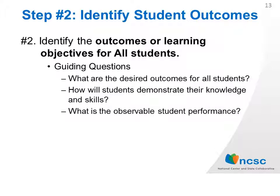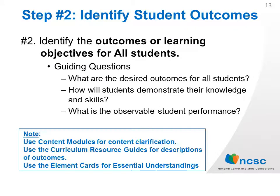There are several guiding questions to consider when completing Step 2. First, ask yourself: what are the desired outcomes for all students? Remember, we are thinking of all students, not just students with a significant cognitive disability. Once the desired outcomes have been determined, consider how students will demonstrate those outcomes — what is the observable student performance that will show acquisition of the knowledge and skills? Several NIC-SIC resources are available for this step, including content modules, curriculum resource guides, and element cards for essential understandings.